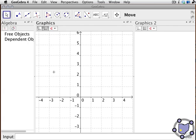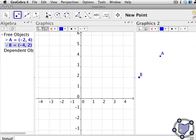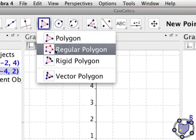What we're going to do in graphics 2 is construct two points. These will represent two points on our equilateral triangle. And then we're going to activate the regular polygon tool. So you go here under the polygon button, pick regular polygon.